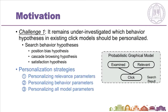First, it remains under-investigated which behavior hypotheses in existing click models should be personalized. For example, the position bias hypotheses, cascade browsing hypotheses, and satisfaction hypotheses. Personalizing different hypotheses leads to different impacts on click behavior modeling. In this paper, we roughly group click model parameters into behavior-related and relevance-related ones. Three different personalization strategies are then designed to investigate which click model parameters should be personalized.